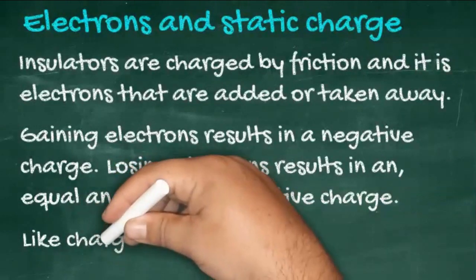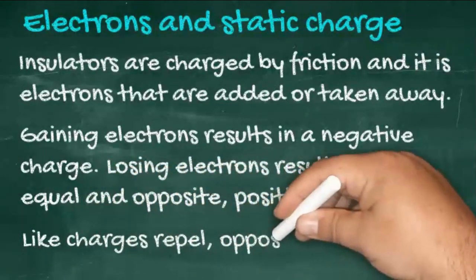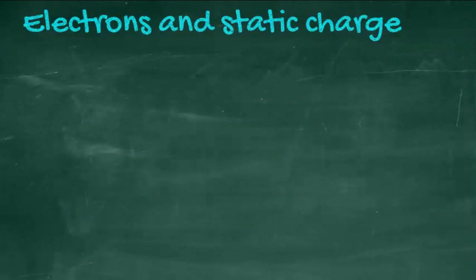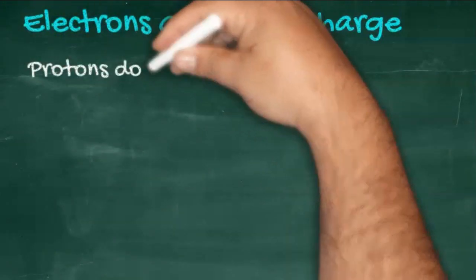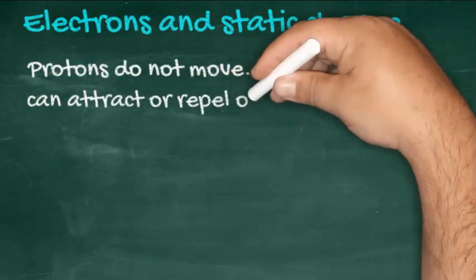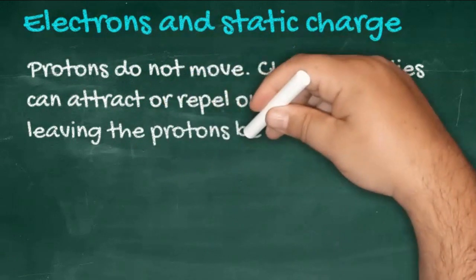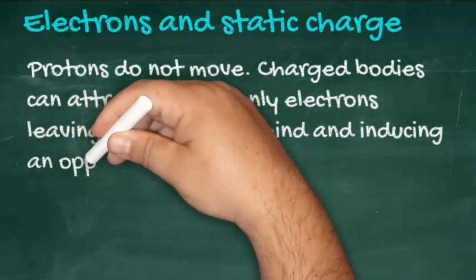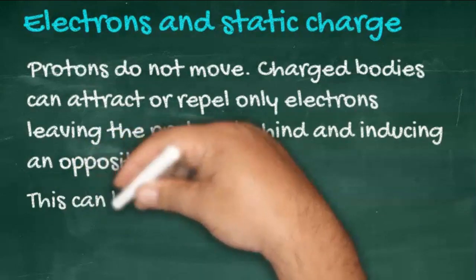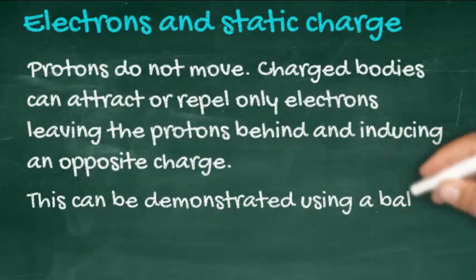Like charges repel, and unlike — opposite — charges attract. When we're talking about static electricity, protons do not move. Large charged bodies can attract and repel only the electrons, leaving the protons behind and inducing an opposite charge.